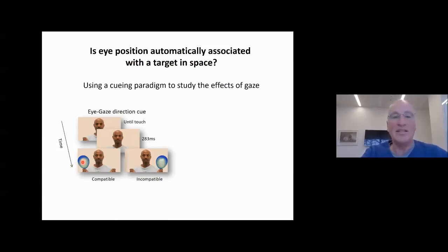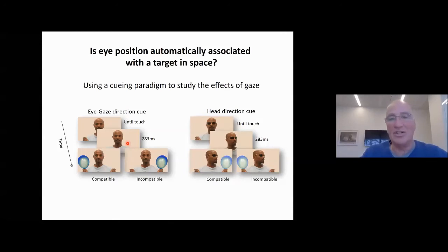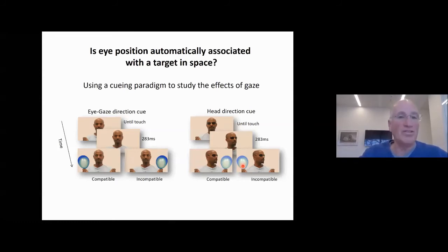You can do this with eye gaze direction and also with head direction cue. With head direction you change the head direction without being able to see the eyes — the head direction is compatible with the balloon appearing on the right, and incompatible if the balloon is on the left. This is essentially a Posner cueing paradigm using gaze direction — either eye or head gaze. We did this with a patient and ran a movie to demonstrate this.